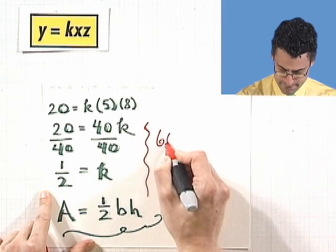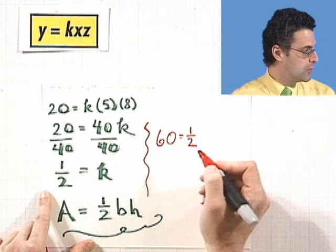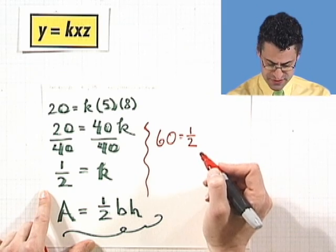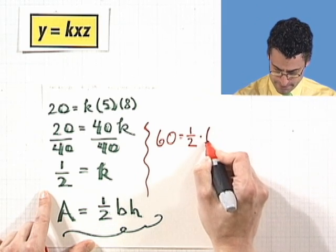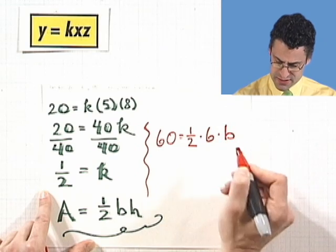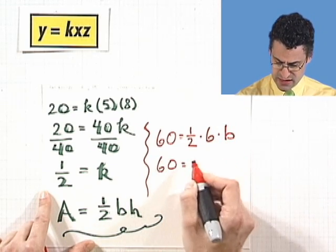We know that A equals 60. We know that H equals 6. I don't know what B is, though. And so I see 60 equals 3B, or not 3B.